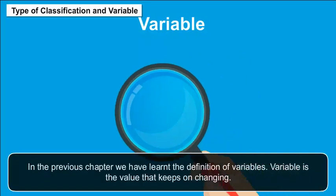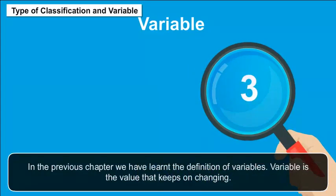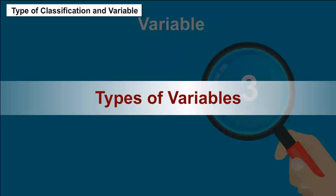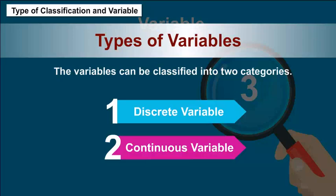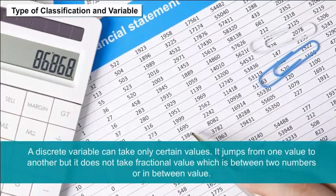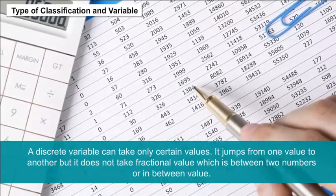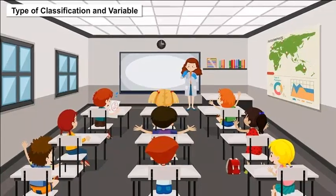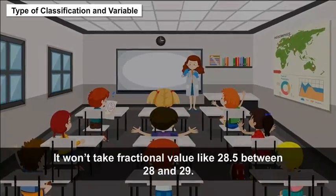Variables: Variable is a value that keeps on changing, and variables vary on the basis of different criteria. Types of variables: A discrete variable can take only certain values — it jumps from one value to another but does not take fractional values between two numbers. For example, the number of students in a class will assume whole number values and won't take a fractional value like 28.5 between 28 and 29.